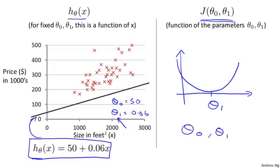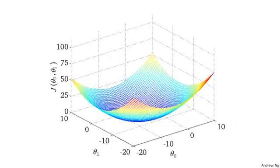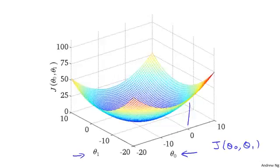When we had only one parameter, the plots we drew had this sort of bow-shaped function. Now, when we have two parameters, the cost function also has a similar sort of bow shape. Depending on your training set, you might get a cost function that looks something like this — a 3D surface plot where the axes are labeled theta zero and theta one. As you vary theta zero and theta one, you get different values of the cost function j of theta zero, theta one. The height of the surface above a particular point indicates the value of j, and you can see it has this bow-like shape.